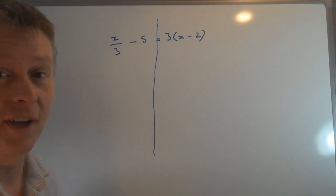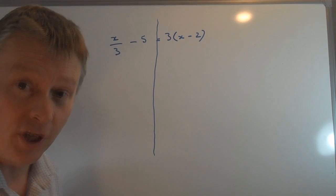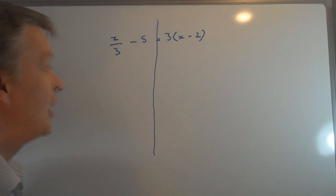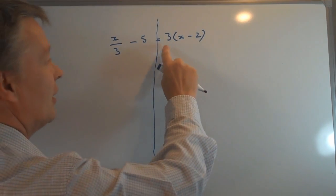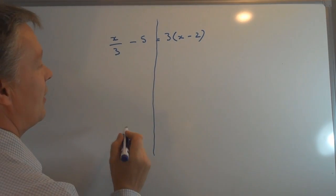The first thing I'm going to do is get rid of the brackets on this side. It won't change the balance of the equation; it just means I can manipulate the x and the minus 6 that I'm going to have.